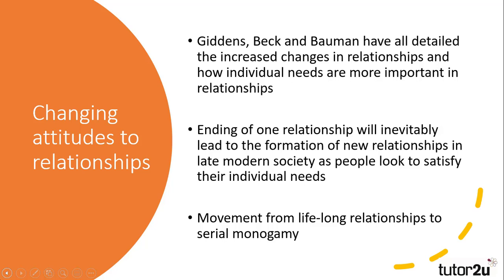Our changing attitudes to relationships have shaped the changes in the family structure. Giddens, Beck and Baumann have all detailed how increased changes in relationships and the focus on an individual's needs have led to greater fragility in relationships. The change from secure and stable lifelong relationships to more insecure forms of serial monogamy have meant that the end of one relationship will inevitably lead to the formation of another. If those people are lone parents and they form subsequent relationships, this leads to the formation of a reconstituted family, as serial monogamy replaces lifelong relationships seen in previous generations.